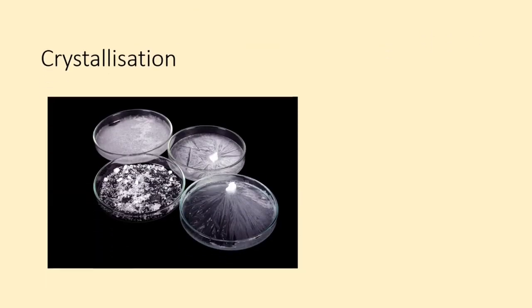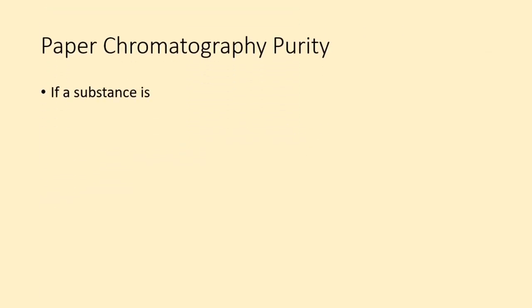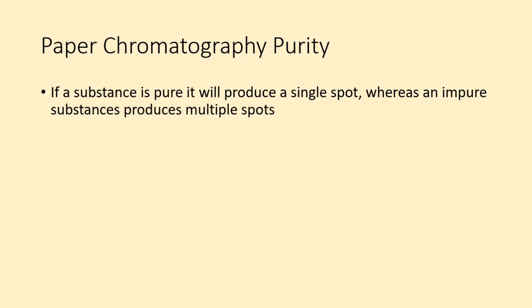An impure solid is dissolved in a solvent and then heated in order to separate by crystallization. Paper chromatography purity: If a substance is pure, it will produce a single spot, whereas an impure substance produces multiple spots.